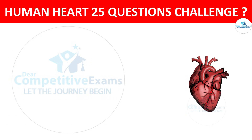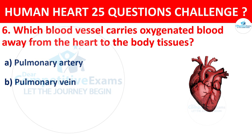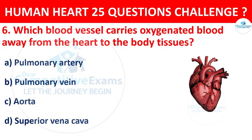Question number 6. Which blood vessel carries oxygenated blood away from the heart to the body tissues? Options: Pulmonary artery, Pulmonary vein, Aorta, or Superior vena cava. Correct answer is C, that is Aorta.